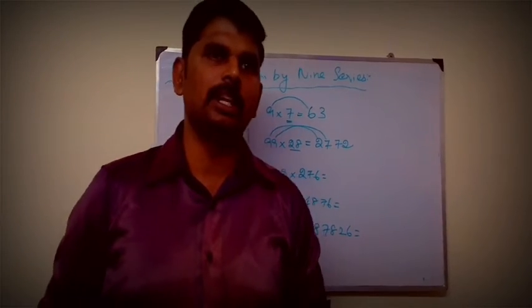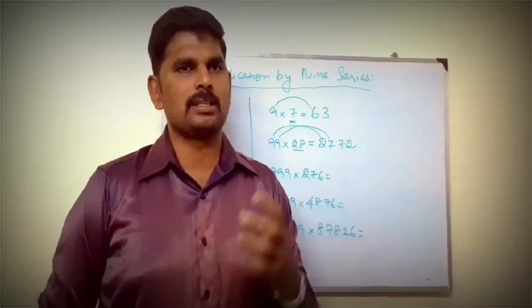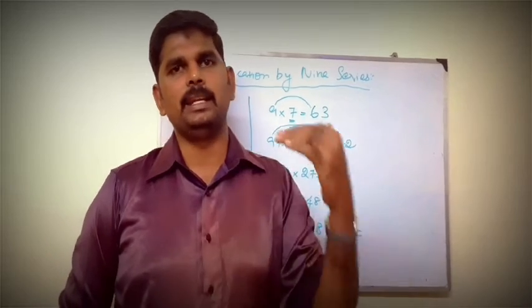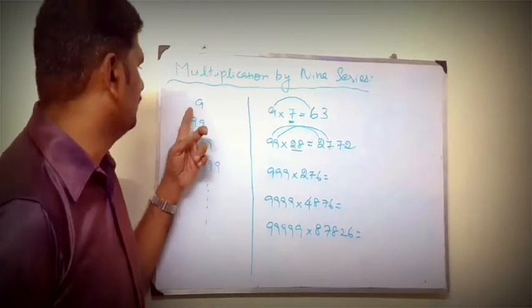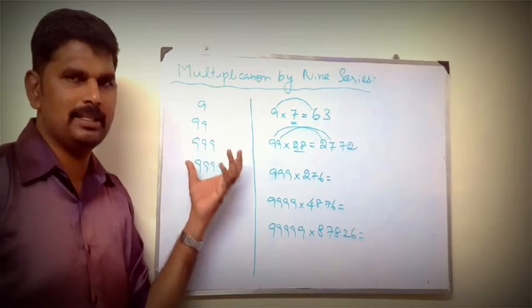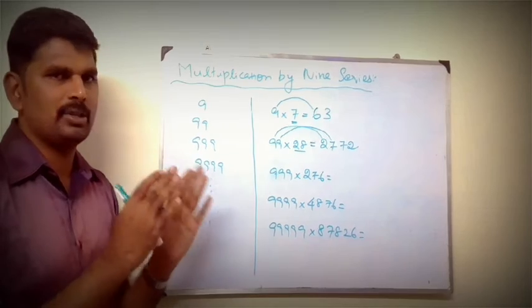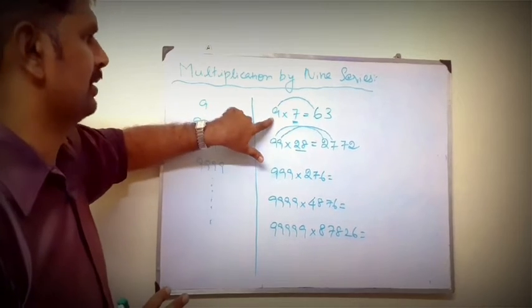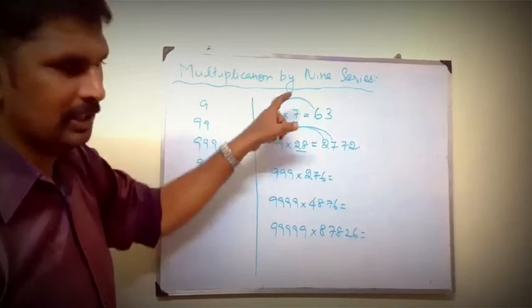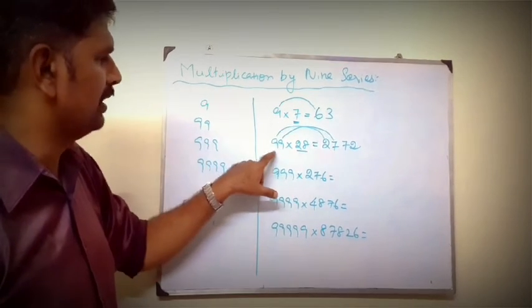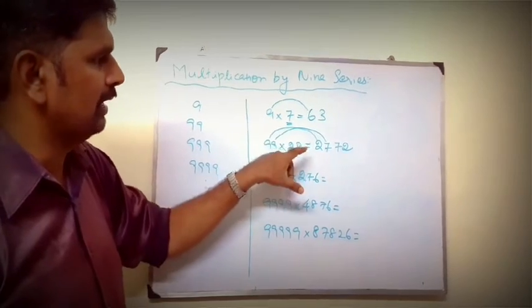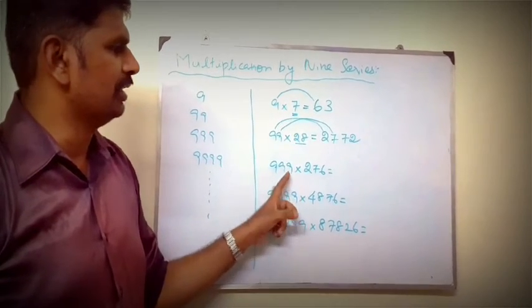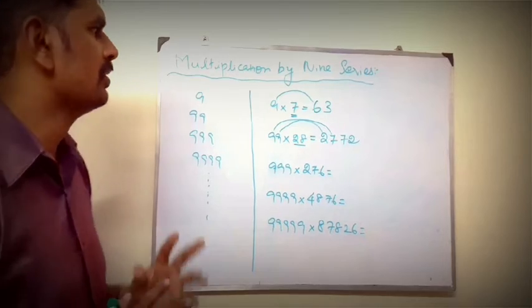Nine series. 9 is a single digit, 99 is a double digit, 999 is a 3-digit number. So if you multiply a 3-digit number, you can use this result. So how do we see this now?